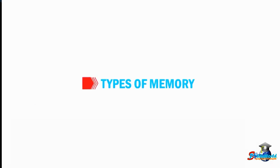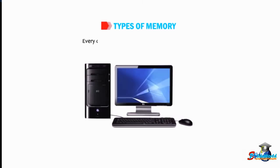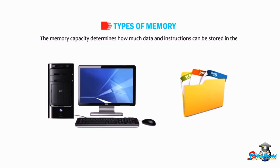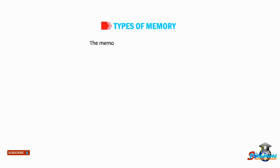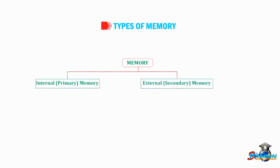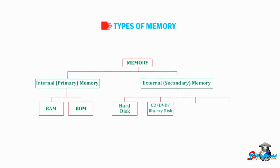Let's now talk about the types of memory. Every computer has a certain amount of memory. The memory capacity determines how much data and instructions can be stored in the computer, either temporarily or permanently. The memory of a computer is of two types: internal primary memory and external secondary memory — RAM, ROM, hard disk, CD, DVD, Blu-ray disk, flash or pen drive, and memory card.